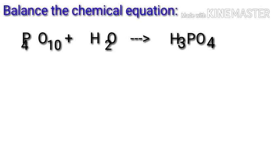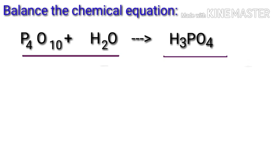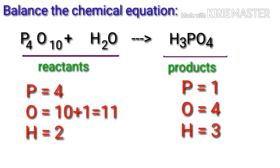Balance the chemical equation. Let's take a look at this equation representing a chemical reaction. In this equation, the reactants are phosphorus pentoxide and water, and the product is phosphoric acid.